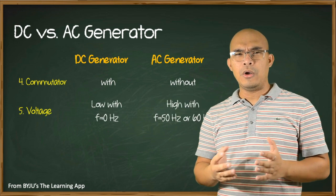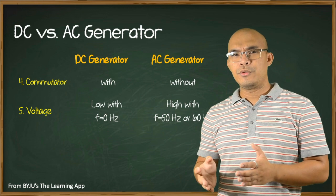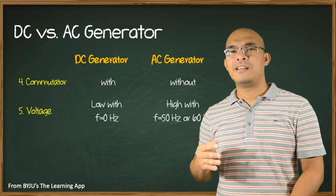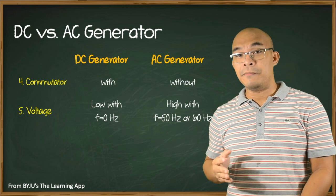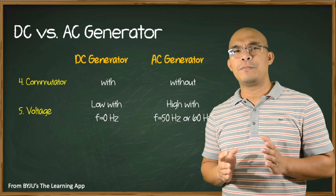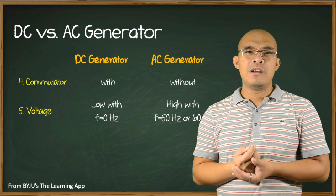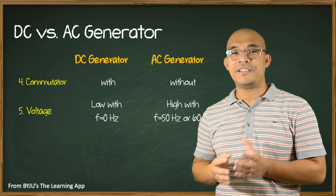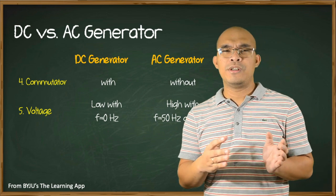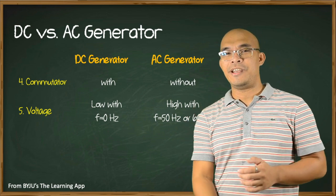DC generators produce low voltage compared to AC generators, which is constant in amplitude and time, meaning the output frequency is zero. AC generators produce high voltage which varies in amplitude and time. The output frequency varies mostly from 50 hertz to 60 hertz.